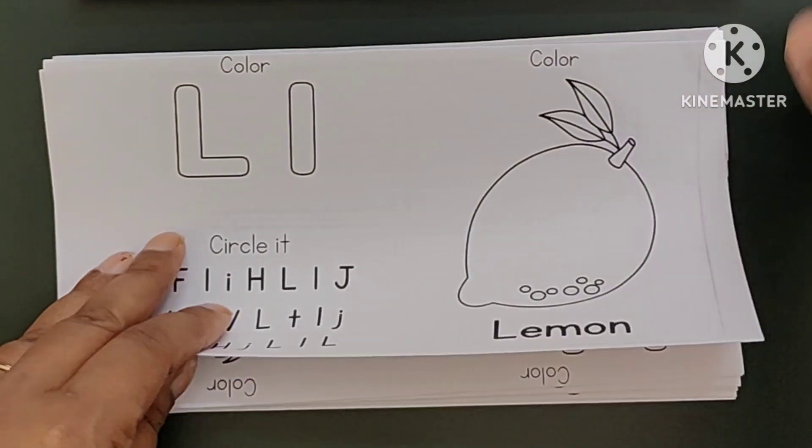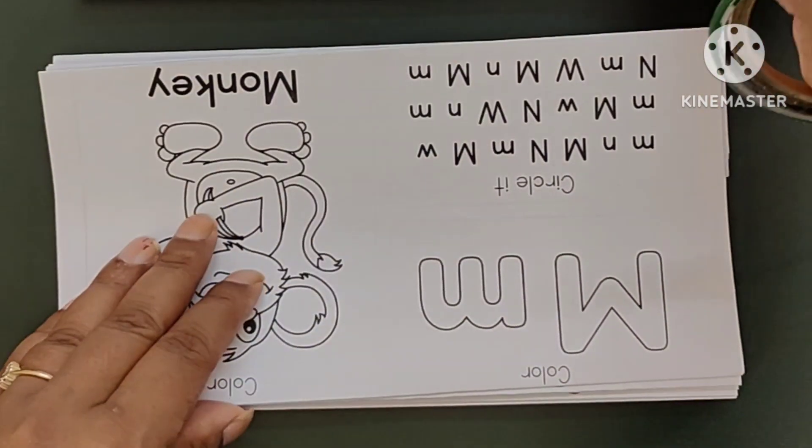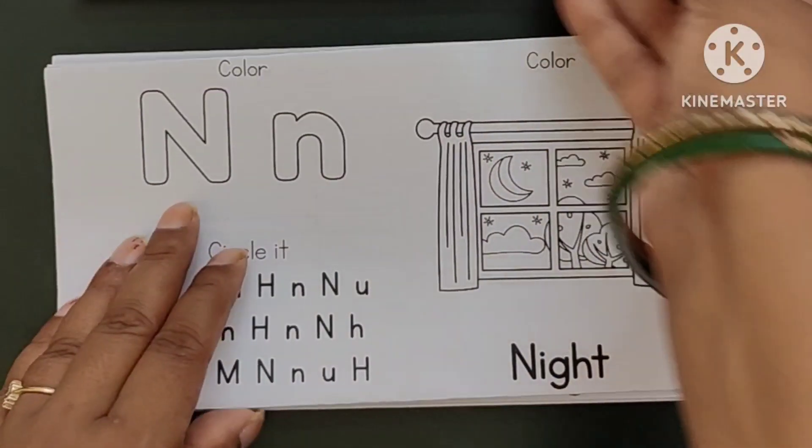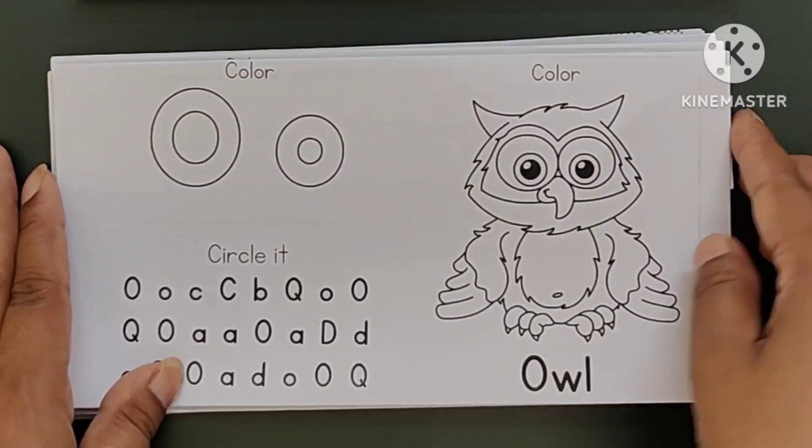K. K for Kite L. L for Lemon M. M for Monkey N. N for Night.